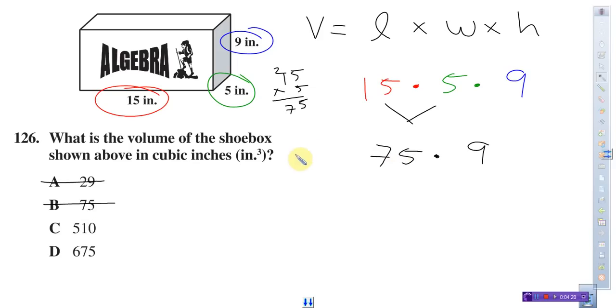Let's go ahead and do 75 times 9. 5 times 9. Carry the 4. 9 times 7 is 63, plus 4. You're going to get 67. So I multiplied here. 675. So, that is, in fact, my answer. Your answer would be D.